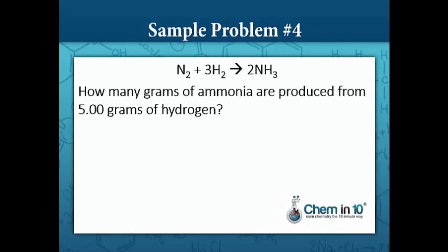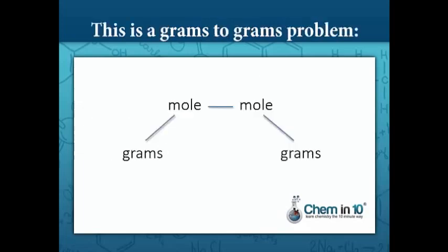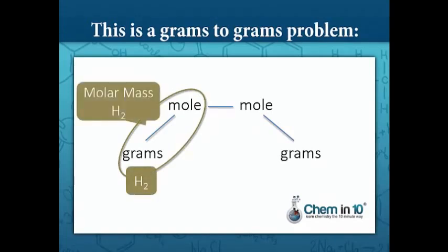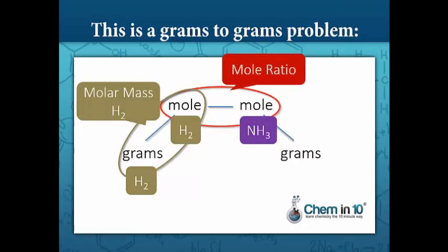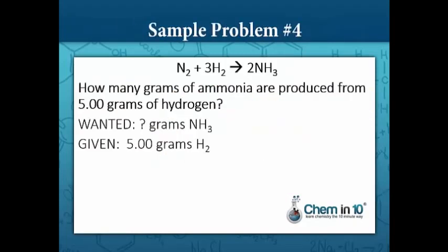Sample problem number four. How many grams of ammonia are produced from five grams of hydrogen? We want to know the grams of ammonia and we're given five grams of hydrogen, so this is a grams-to-grams problem. We'll go from grams of hydrogen to moles of hydrogen by dividing by the molar mass of hydrogen, then convert to moles of ammonia using the mole ratio, and finally convert to grams of ammonia using the molar mass of ammonia. Hydrogen gas is about two grams per mole, so we have about two and a half moles of hydrogen.